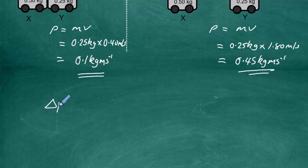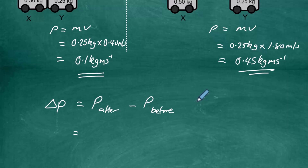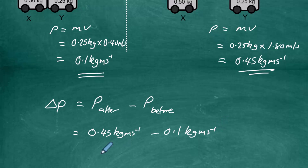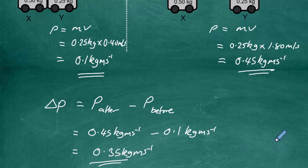To find the change of momentum, we use delta p, which equals momentum after minus momentum before. From our diagram, the momentum after is 0.45 kg·m/s and momentum before is 0.1 kg·m/s. Therefore the change of momentum is 0.35 kilogram meters per second. Since we are only asked for the magnitude, the answer is 0.35 kg·m/s.